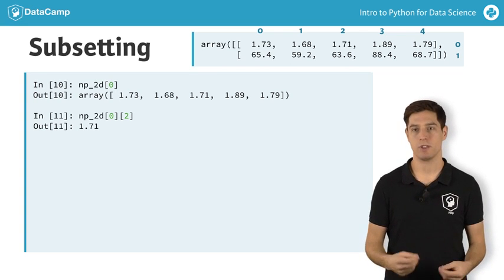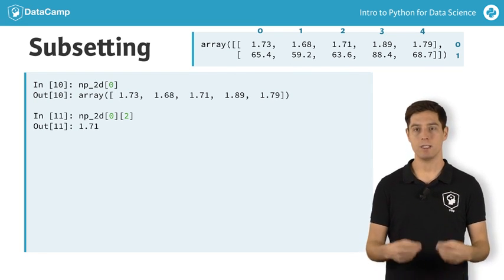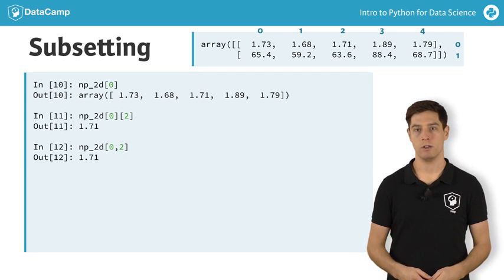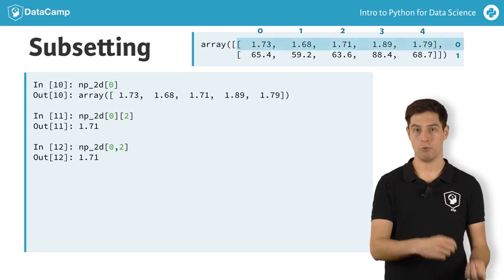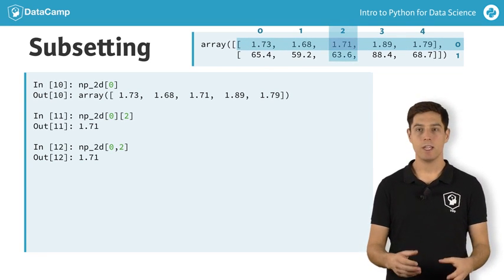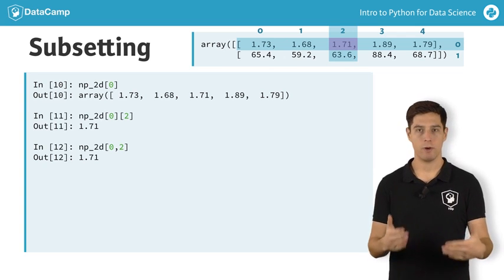There is also an alternative way of subsetting, using single square brackets and a comma. This call returns the exact same value as before. The value before the comma specifies a row, the value after the comma specifies a column. The intersection of the rows and columns you specified are returned.